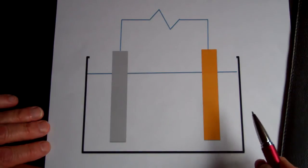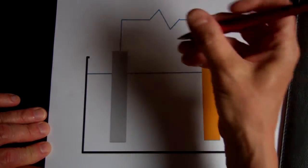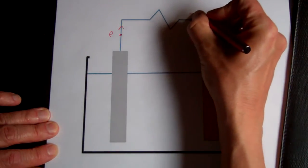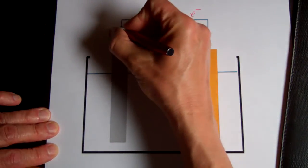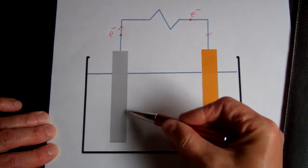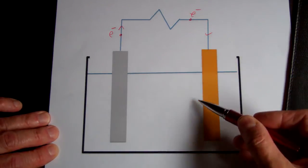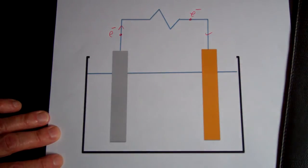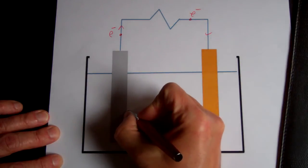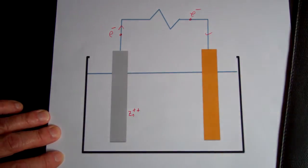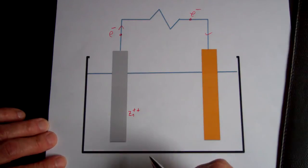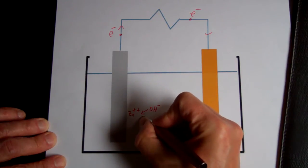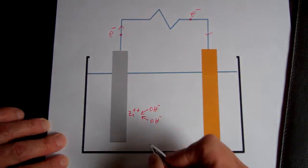Because of the difference in electrochemical potentials between the zinc and the copper, electrons will want to flow from the zinc to the copper. So that will leave the zinc electrode positively charged and the copper electrode will start to become negatively charged. So, at the zinc solution interface, what will happen is that zinc ions will enter solution and they will be doubly charged. And the zinc ions will combine with two hydroxide ions to form zinc hydroxide.